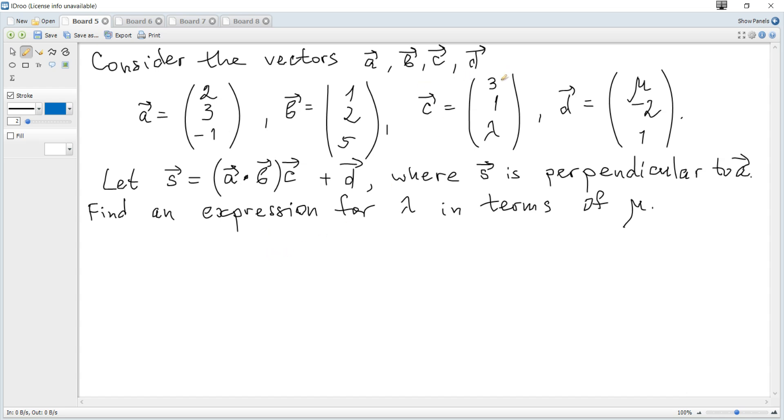Consider the vectors a, b, c, and d. Let s vector be a dot b, c vector plus d, where s is perpendicular to a. Find an expression for lambda in terms of mu.